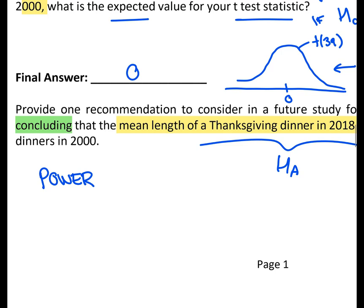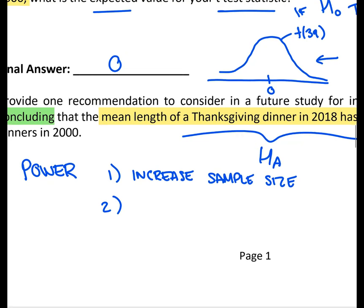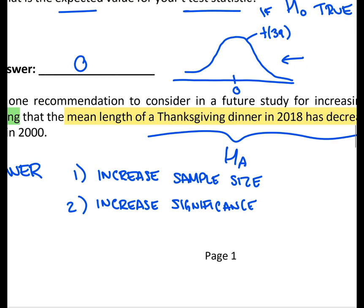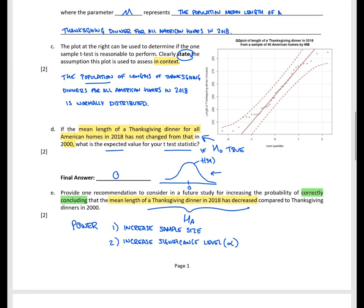If we think about what we could do to increase power, we have two options. We could increase the sample size, or our other option is that we could increase the significance level, which is our value of alpha. So either of these two options would have been correct for part E. And that concludes page one.